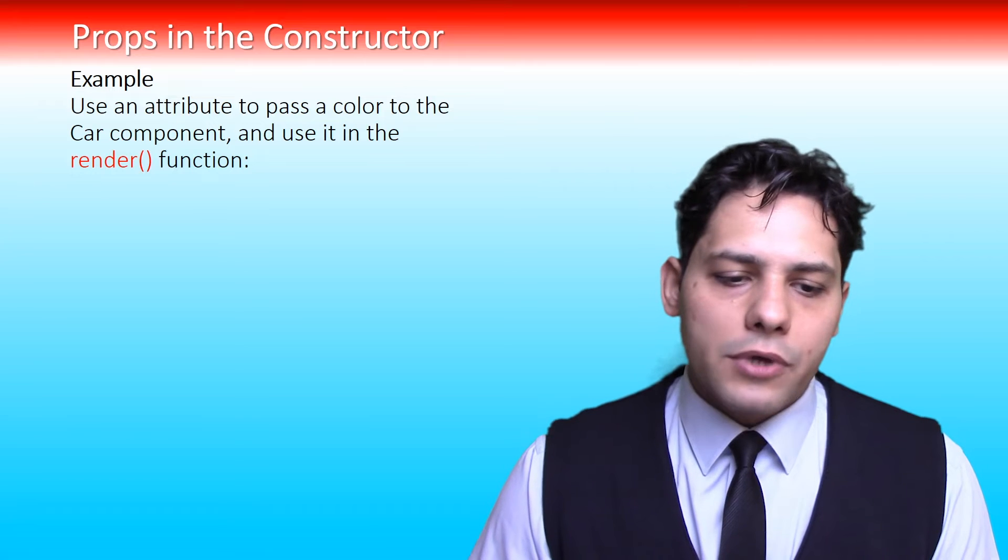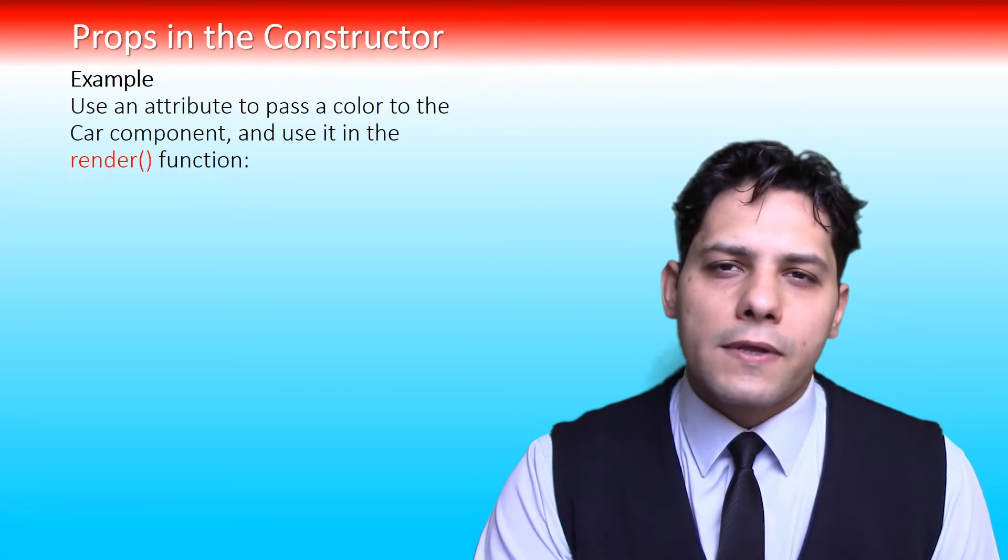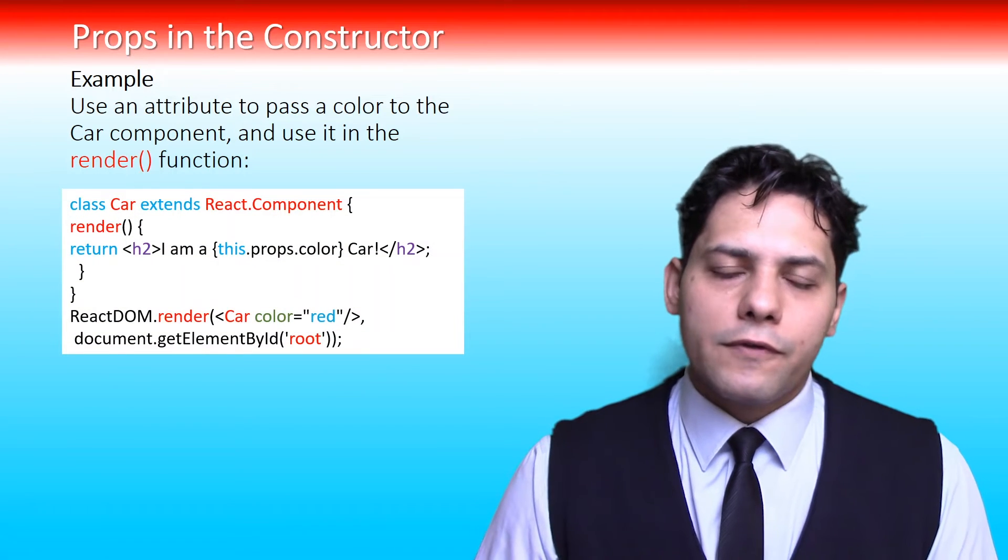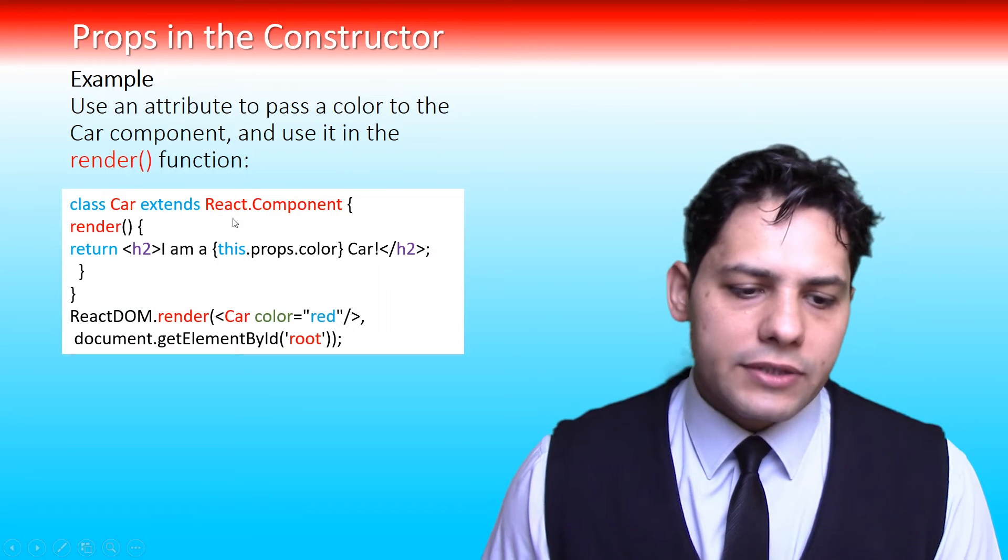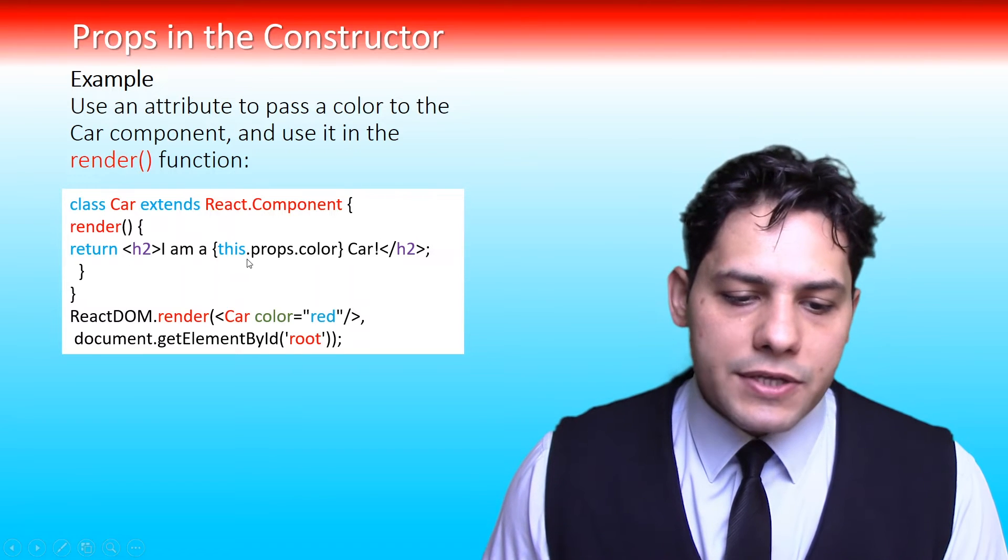Let's explain it by a simple example. In this simple example we are going to use an attribute to pass a color to the car component and use it in the render function. Please carefully look at this code. In this code we are defining a car component: class Car extends React.Component, render, return I am this.props.color.